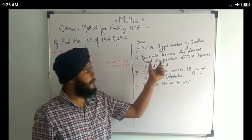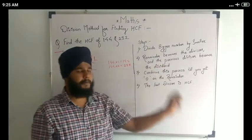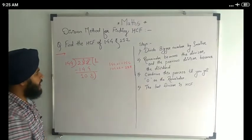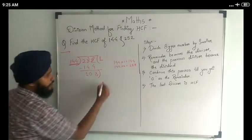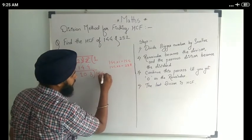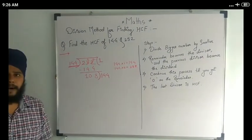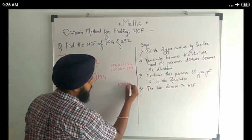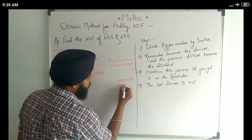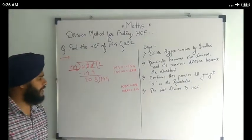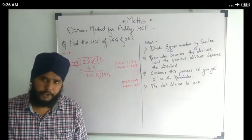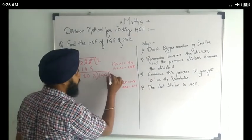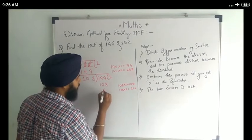The second step is: the remainder becomes the divisor and the previous divisor becomes the dividend. Now 108 is our divisor, and the previous divisor, 144, becomes the dividend. So we are going to divide 144 by 108. 108 ones are 108.